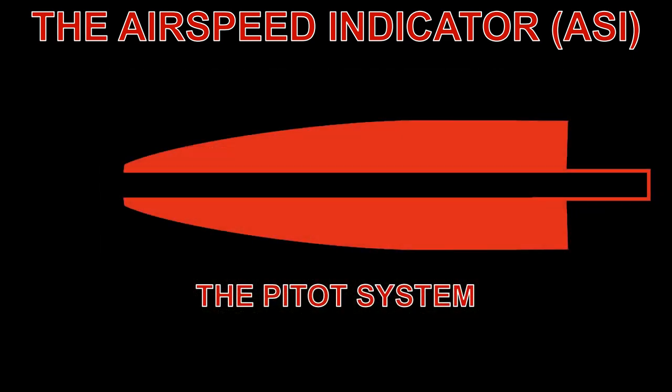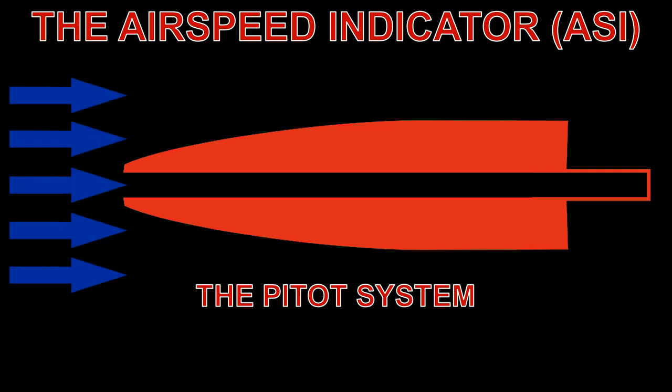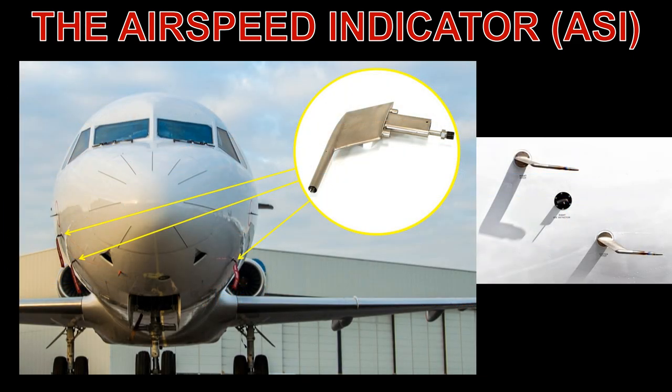The pitot pressure is obtained from the pitot tube. The pitot pressure is a measure of ram air pressure, or the air pressure created by the air ramming into the tube, which is also called total pressure. The pitot tube is most often located on the wing or front section of an aircraft, facing forward, where its opening is exposed to the relative airflow.